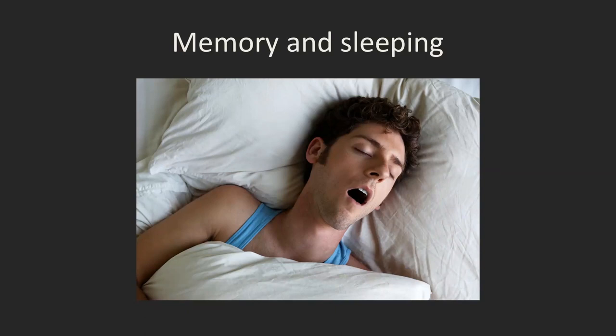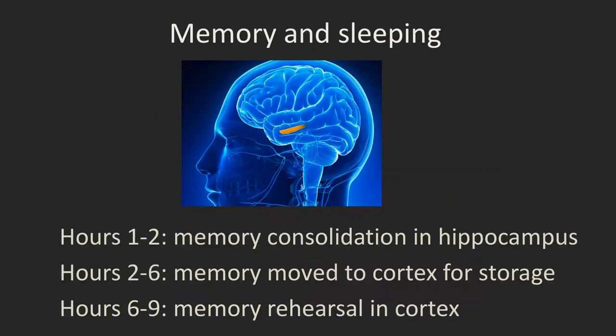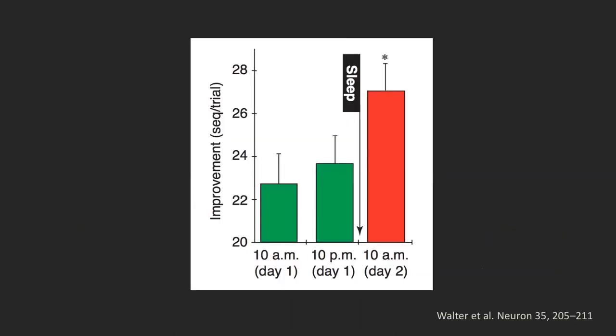What is clear is that sleeping is vital for us to be able to remember things. They've parsed this out: first we consolidate memories in the hippocampus, then move them to the cortex, where they get rehearsed and reorganized. A group of subjects learned a visual motor task and performed it at 10 o'clock on day one, then again — with nothing done in between. They went to sleep, and when they woke up, they performed it a third time and were way better. All they did was sleep.